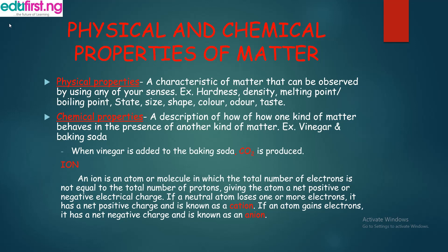Another thing I would like us to look at is an ion. An ion is an atom or molecule in which the total number of electrons is not equal to the total number of protons, giving the atom a net positive or negative electrical charge. If a neutral atom loses one or more electrons, it has a net positive charge, and it is known as a cation.